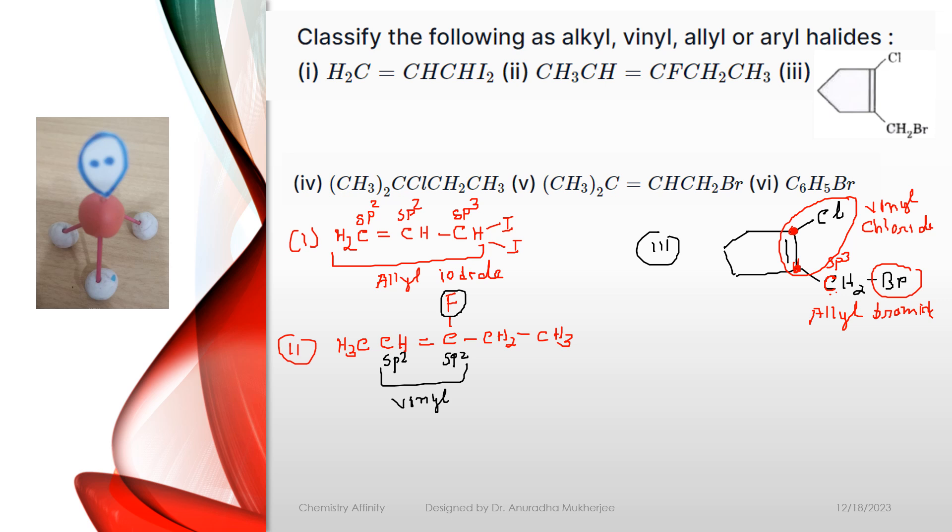Next, carbon is connected with 2 methyl groups, 1 chlorine, then CH2, CH3. Now, this carbon is a tertiary carbon, so it is an alkyl chloride.